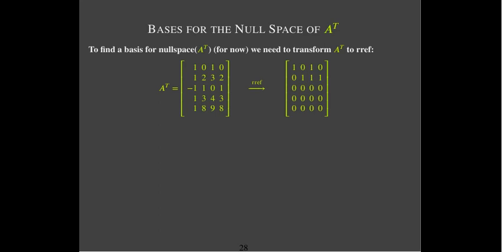Now for A transpose — if I'm going to find its null space, I first have to form A transpose by interchanging the rows and columns of A. Then I transform it to reduced row echelon form. I only have two leading ones again, which makes sense. The row space of A transpose is going to be the column space of A.